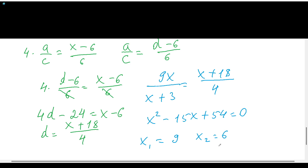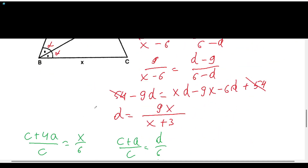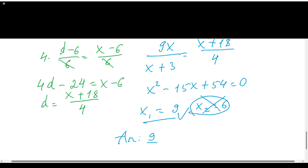We have two answers, but which is correct? Going back to the triangle, we can see that the height is equal to 6. Therefore x cannot equal 6, so we cross it out. Our answer is x = 9. If you like this solution, please subscribe to my channel and press the like button. Thank you for your attention — see you soon in the next videos, bye-bye!